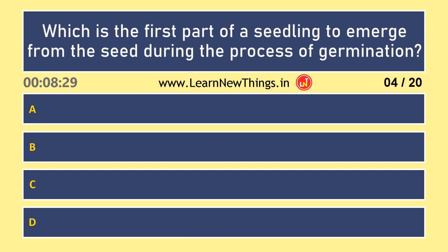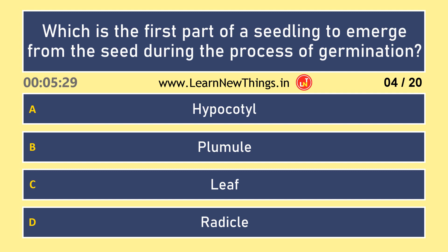Which is the first part of a seedling to emerge from the seed during the process of germination? Radicle.